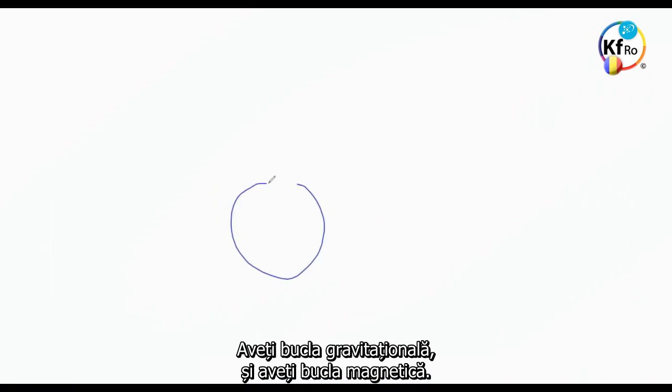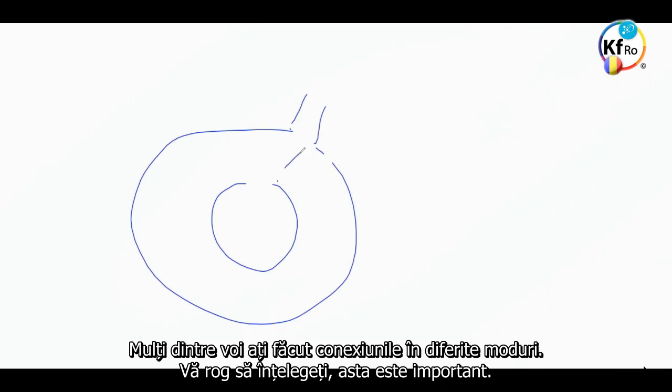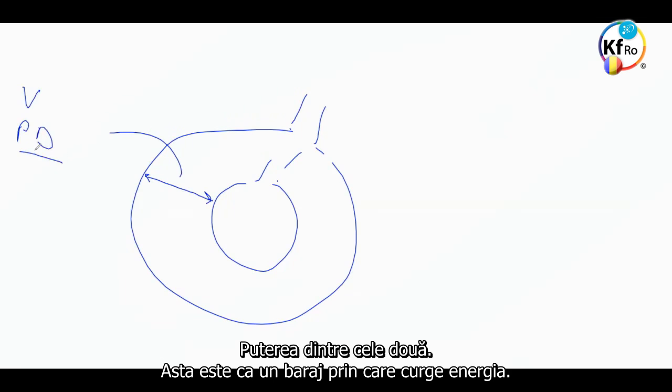And that is, you have your Gravitational ring and your Magnetical ring. A lot of you have connections in different ways to it. Please understand, this is important. The strength between the two is your voltage, or your potential difference as we call it. The strength between the two.